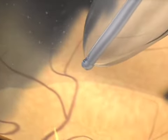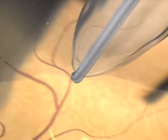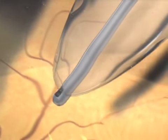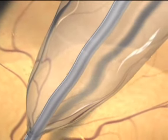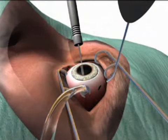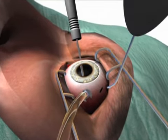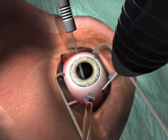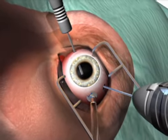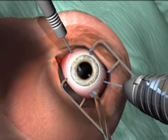A core vitrectomy is performed to create a channel for introducing the Vidion device in the same opening as created for the vitrectomy cutter.